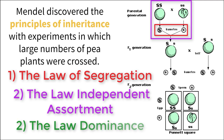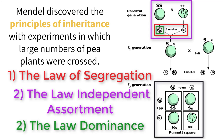The Principle of Dominance states that some alleles, which we call recessive, are masked or hidden by dominant alleles in terms of the traits that are expressed. We can represent all of these principles in a diagram called a Punnett Square, which shows separate alleles being crossed by two parents and all of the possible outcomes of the next generation. Note that dominant alleles are written with a capital letter, while recessive alleles are written in lowercase.